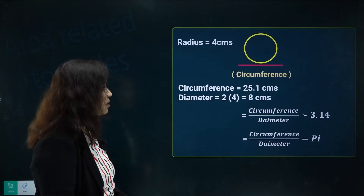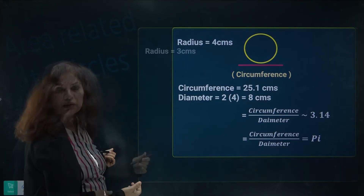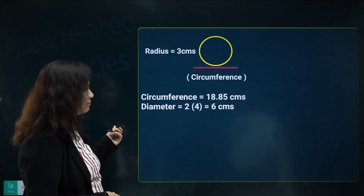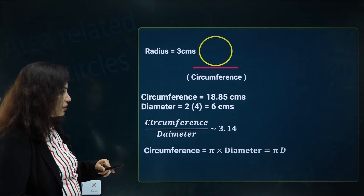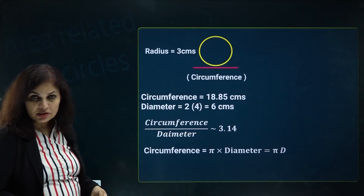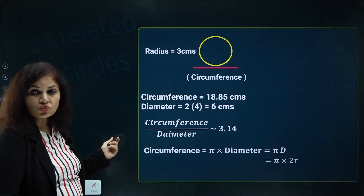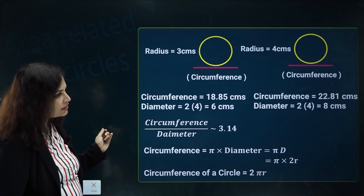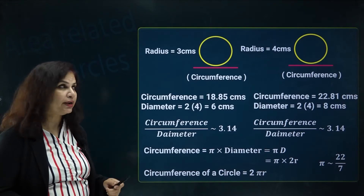This constant value is known as pi, and it will be very helpful in finding the area of a circle. Since circumference divided by diameter equals pi, multiplying pi by the diameter gives the circumference. The circumference of a circle is pi times diameter, that is 2r, so the formula for circumference is 2πr. This holds true for all circles. The approximate value of pi can be taken as 3.14 or 22/7.